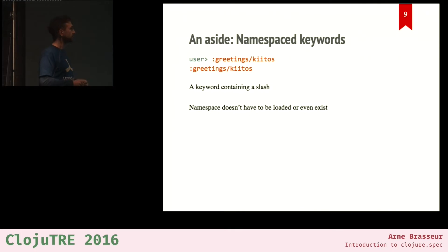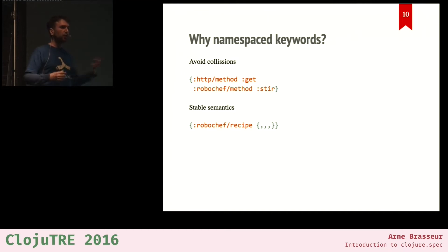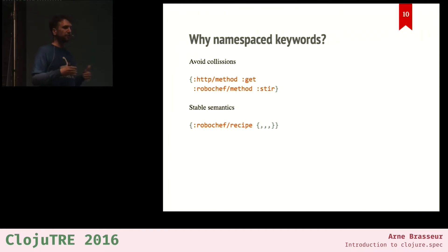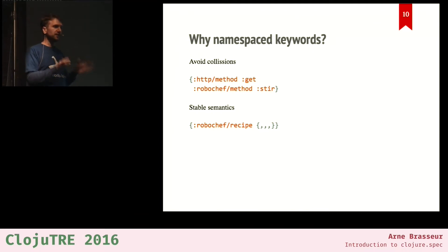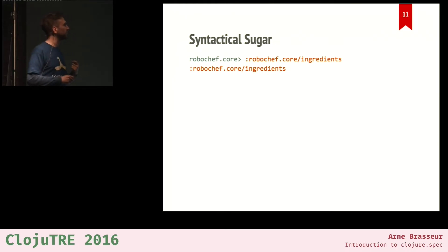Why do we namespace our keywords? To avoid collisions. Say in HTTP you have a request method — the HTTP verb — but our robot chef might also have a method, like stir versus boil. If you just use the word 'method' that could be ambiguous in a bigger system. What it really boils down to is having unambiguous and stable semantics. If you use a prefix — say the name of your library or a namespace you control — then you get to define what the semantics of that key and its value are.